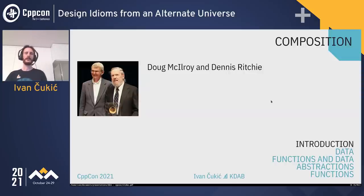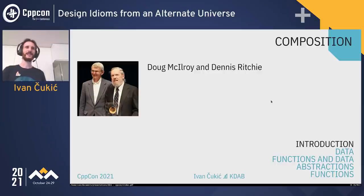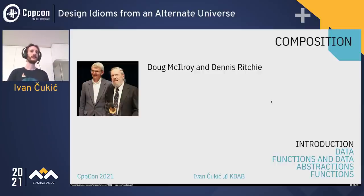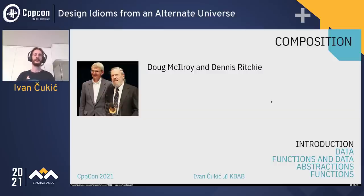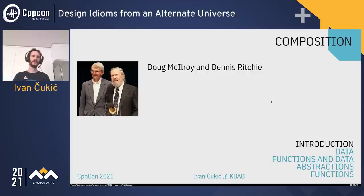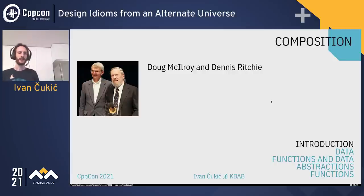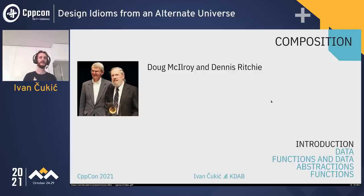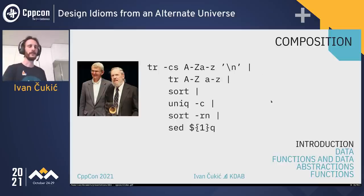I'm going to start this talk by explaining what I think software design is and why this is from an alternate universe. In this picture you can see two famous people. Obviously everybody knows Dennis Ritchie, and not many of you have probably heard of Doug McIlroy. I would say that Doug is the father — not of composition — but of the cool composition. He is the father of Unix shell scripting, specifically shell piping.